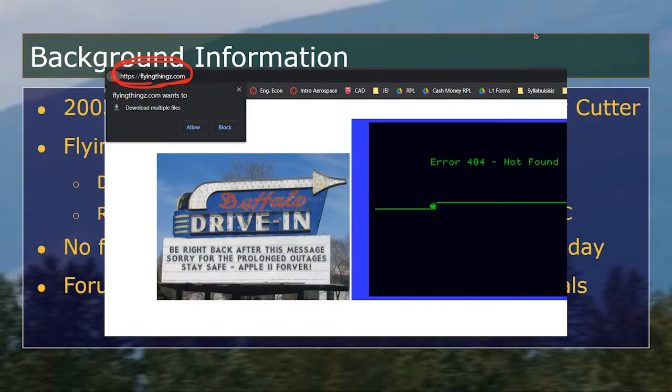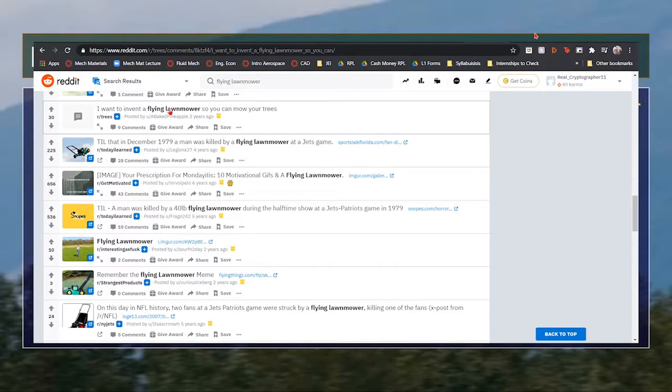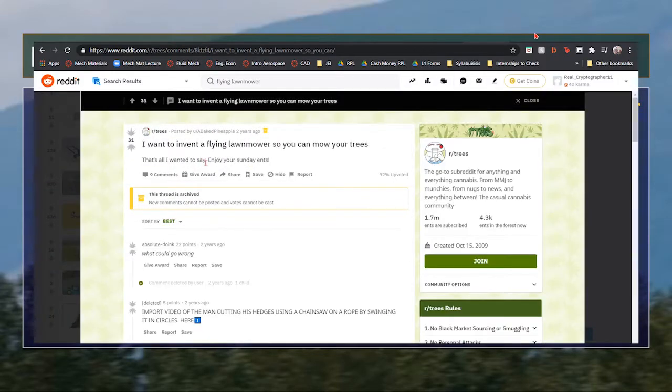Today, there are no functioning links to purchase the skycutter, so if you wanted a flying lawnmower, you would have to build it yourself. This is why you might find a lot of forum posts asking for plans on how to build it.